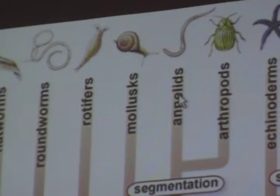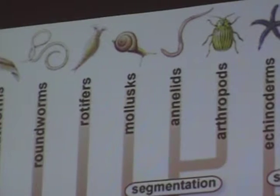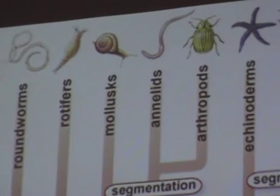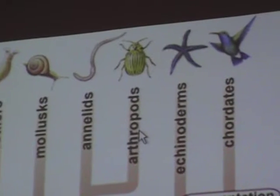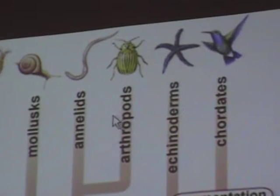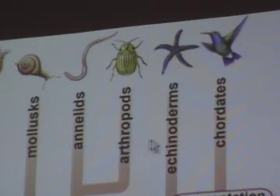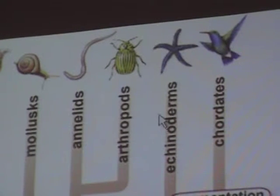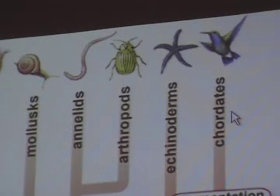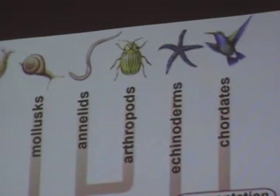Annelids include earthworms and leeches. Arthropods include insects and spiders and crabs and lobsters, crayfish, shrimp. Echinoderms are starfish and sea urchins. And chordates include fish, amphibians, reptiles, birds, and mammals.